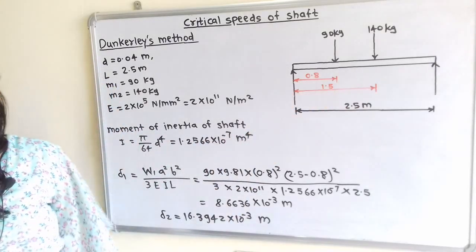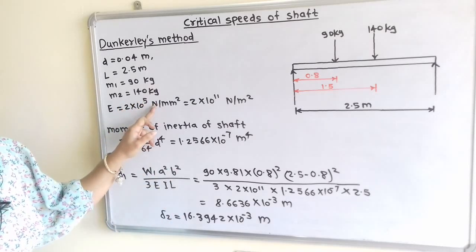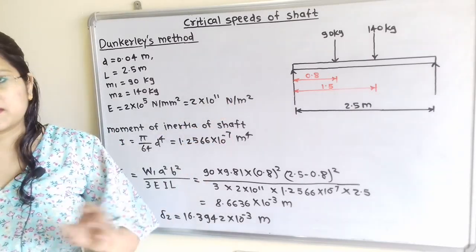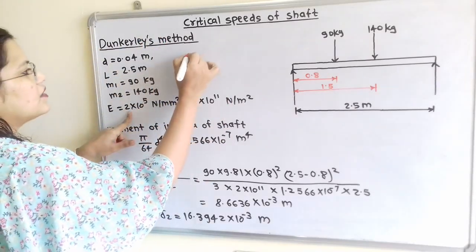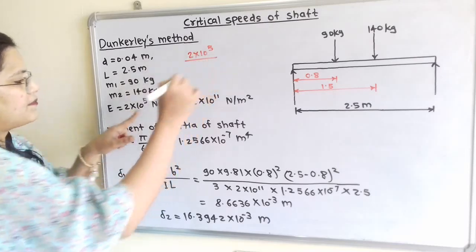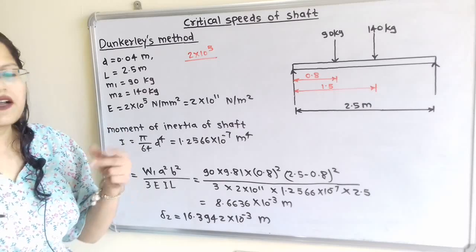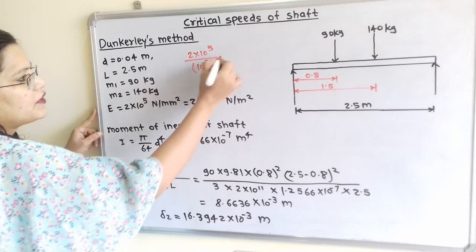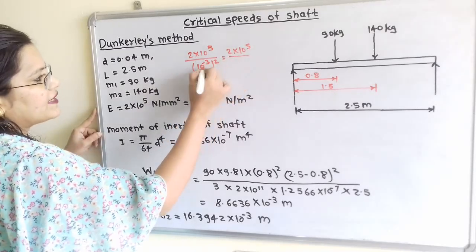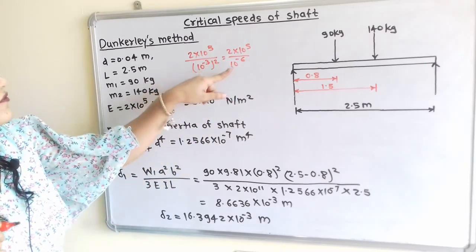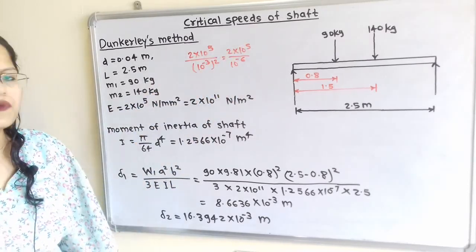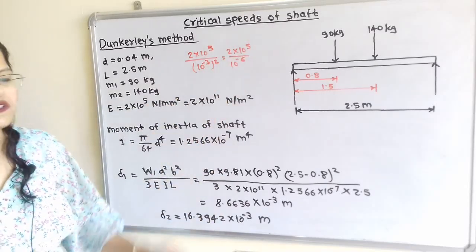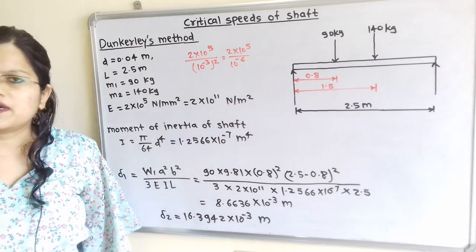Modulus of elasticity is also mentioned 2 into 10 raise to 5 N per mm square. So standard unit is N per m square. So how to convert it? I will rewrite here 2 into 10 raise to 5 divided by, now for this mm we will convert it into meter that is 10 raise to minus 3 bracket square. So 2 into 10 raise to 5 divided by 10 raise to minus 6. Now if we take this 10 raise to minus 6 in the numerator then it will become 10 raise to 6, so 6 plus 5 that is 11. So 2 into 10 raise to 11 N per meter square.